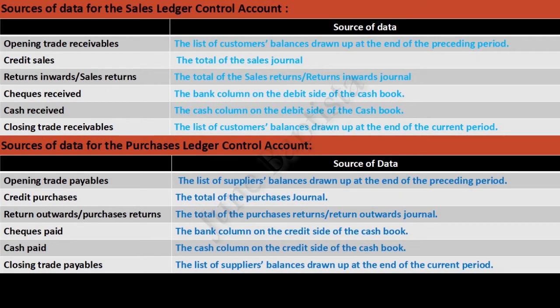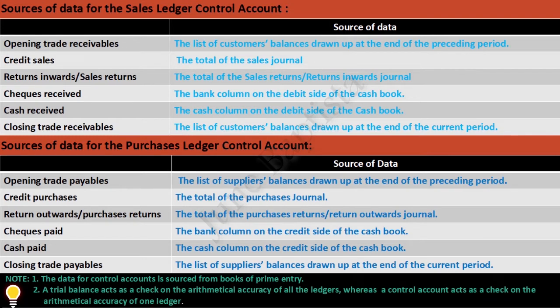Sources of data for control accounts. Note 1: the data for control accounts is always sourced from books of prime entry. Note 2: a trial balance acts as a check on the arithmetical accuracy of all ledgers, whereas a control account acts as a check on the arithmetical accuracy of just one ledger.